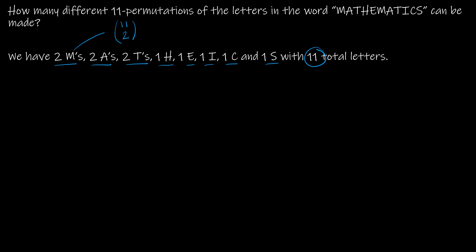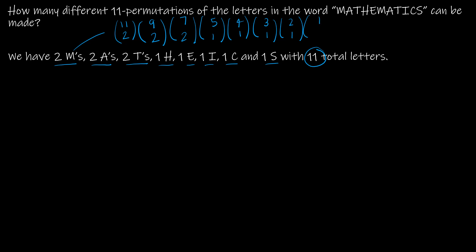Now let's talk about A's. If I've already placed the two M's, I now have nine places left, so I have to choose two of them for A's — that's 9 choose 2. Then I've got seven locations left and I have to choose two of them for T's. Now I've got five places left and I have to put just one H, then four places left for one E, three places left for one I, two places left for one C, and then one place left for the one S.